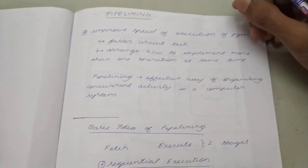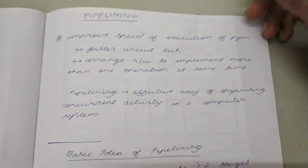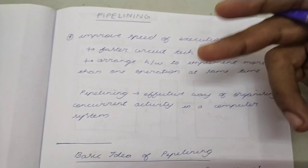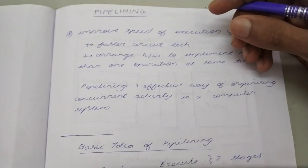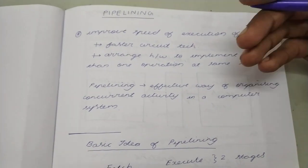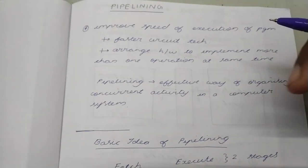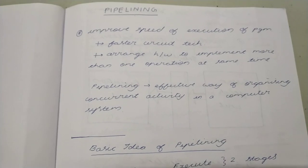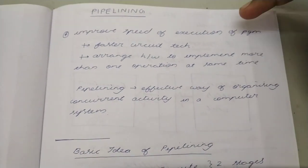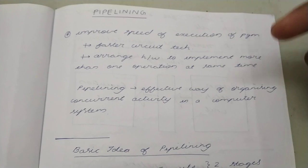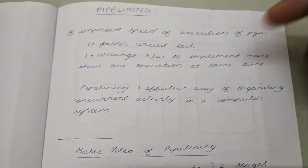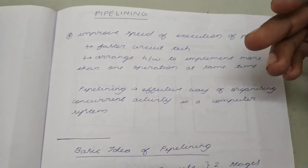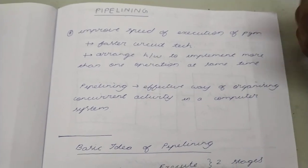What are the different ways that we can increase the speed of execution of a program? Well, the first way is we can include faster circuit technology. But when we think about it, there is a limit to increasing the speed of the circuit technology that we are using right now. So another way to increase the speed of execution of the same program is, instead of increasing the speed of the circuit technology, we can actually arrange the hardware in such a way that they can implement more than one operation at the same time.